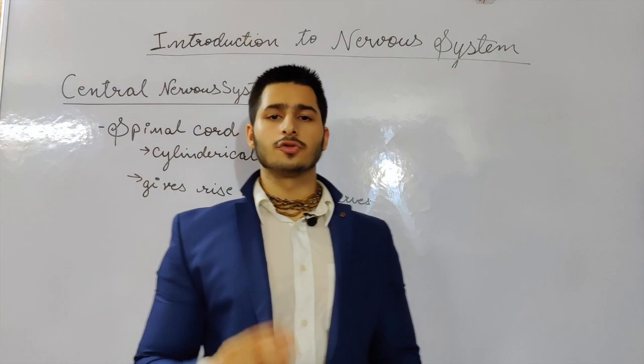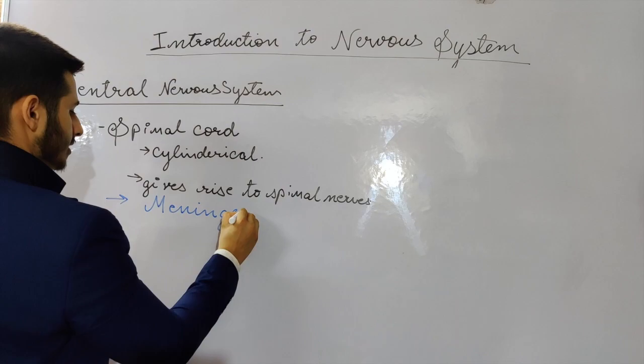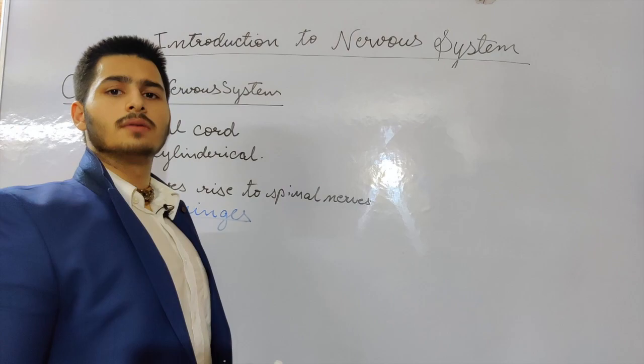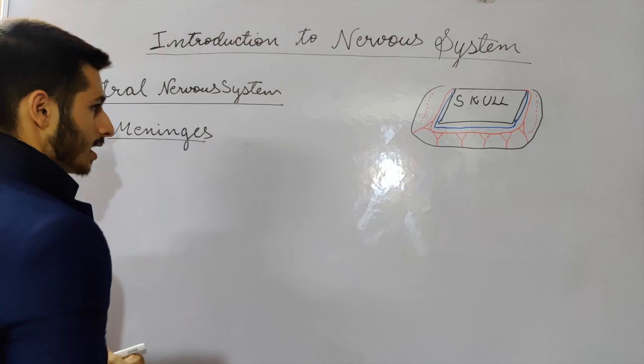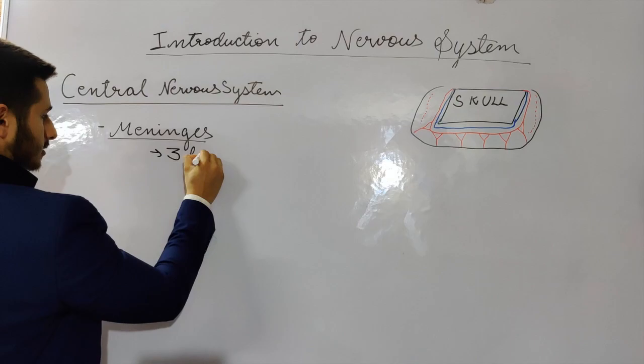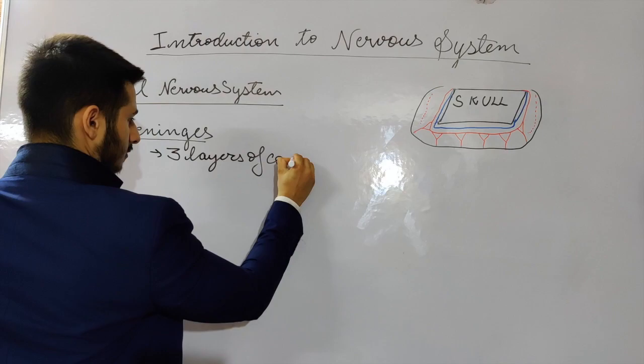The spinal cord and the brain are suspended and protected by three layers of connective tissue called meninges. The meninges are three layers of connective tissue that surround, suspend, and protect the brain and the spinal cord.